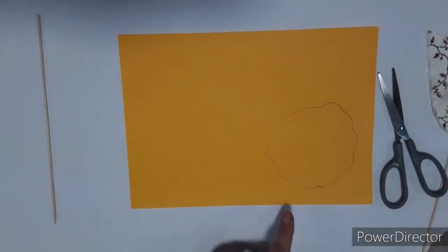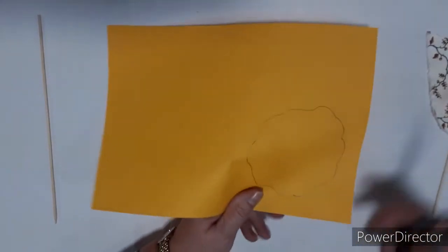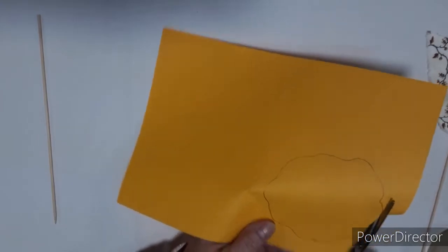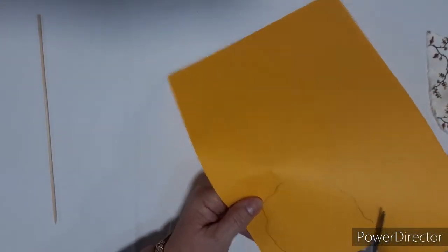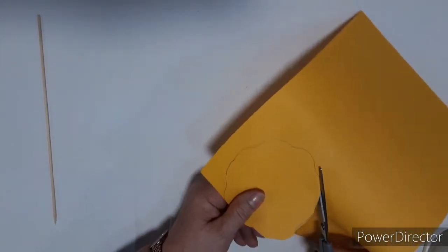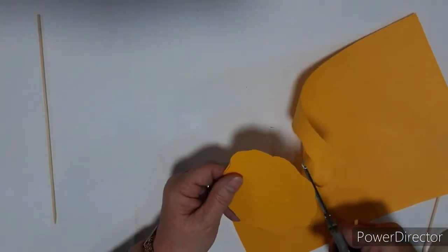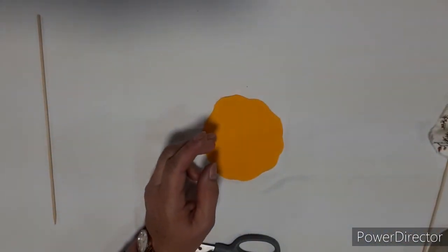So I'm going to cut out that shape. It's just a rough shape for the outer edge of your rose. Snip that out, get rid of the excess paper.